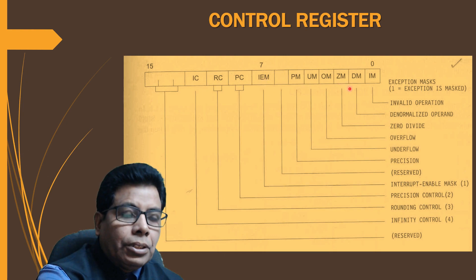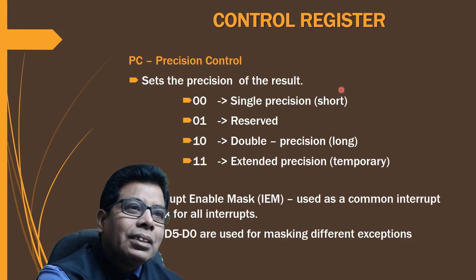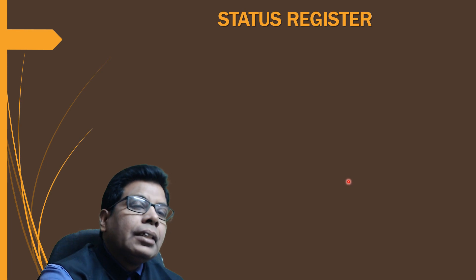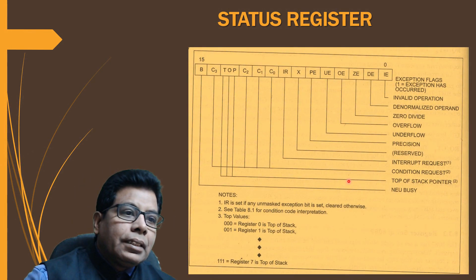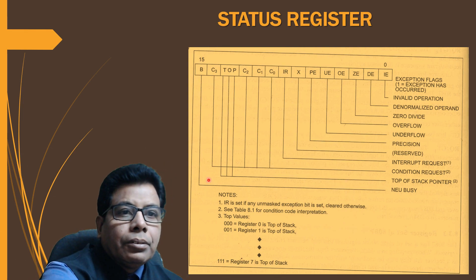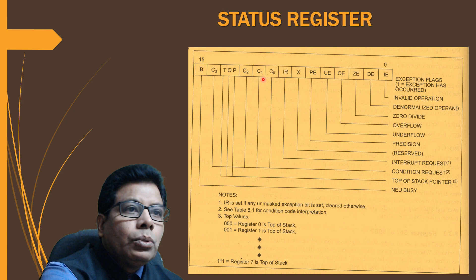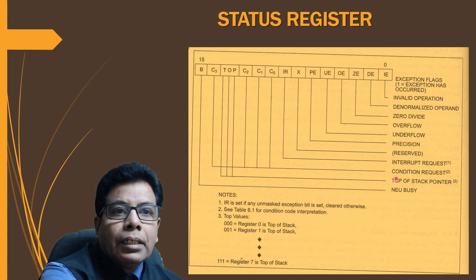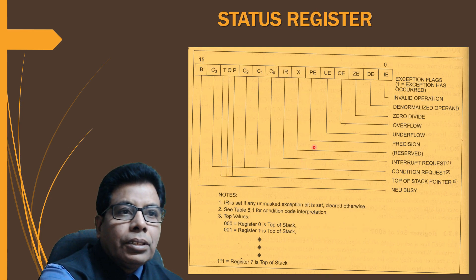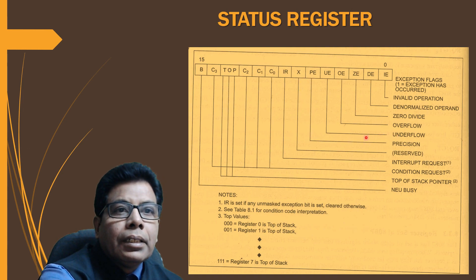The status register is also a 16-bit register. Its fields include: B (busy bit), C3, C2, C1, C0 (four conditional code bits), TOP (top-of-stack pointer), IR (interrupt request), and exception flags PE (precision), underflow, and overflow.